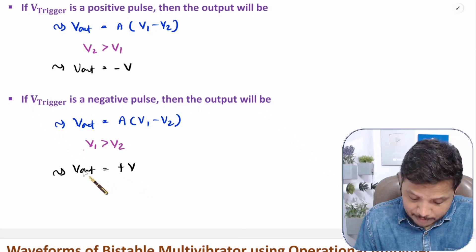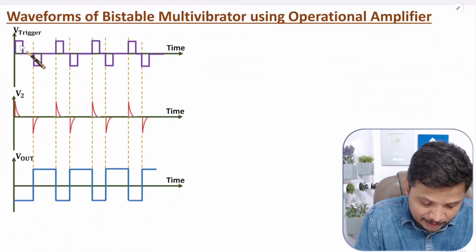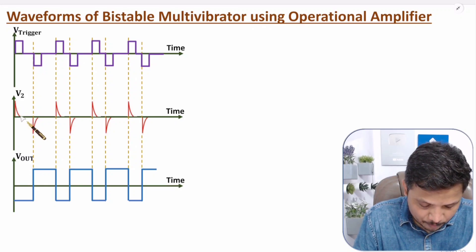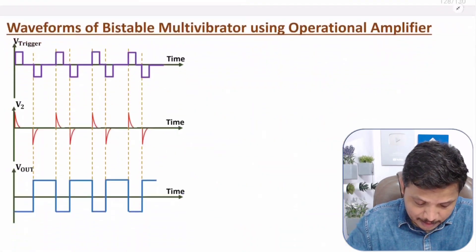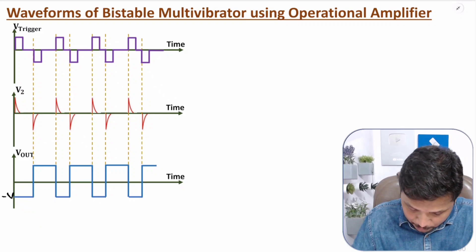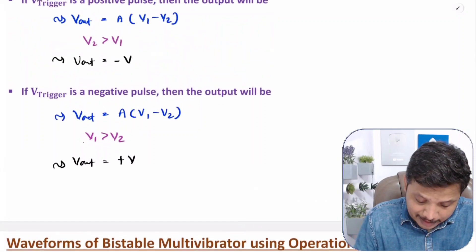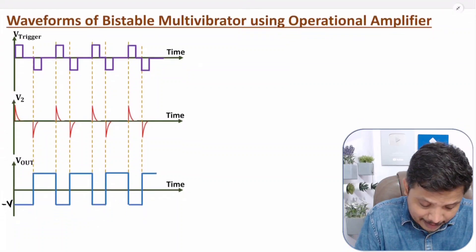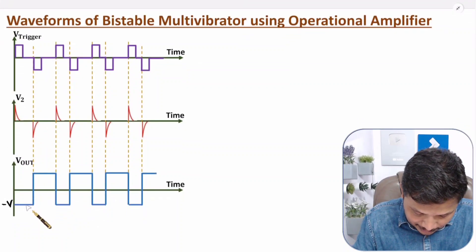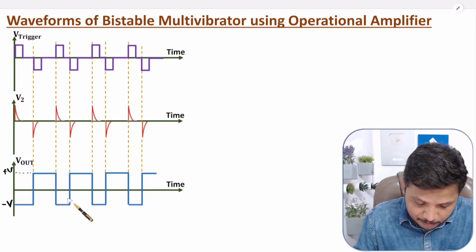Based on this, let us try to understand the waveforms. Here in the waveforms, we have a positive pulse. If you have a positive pulse, there will be a positive spike at V2. So if you have a positive spike at V2, your output should be minus V — and you can see output is minus V here. If you have a negative pulse, then Vout will be plus V. We are giving a negative pulse, so V2 will be a negative spike, and there will be a transition from minus V to plus V. And that is what you can repeat based on pulses.